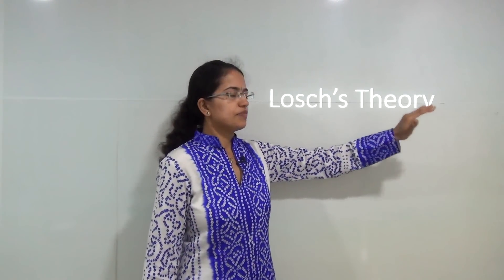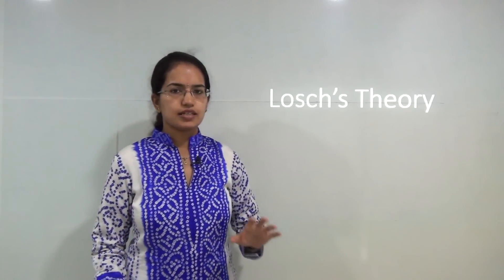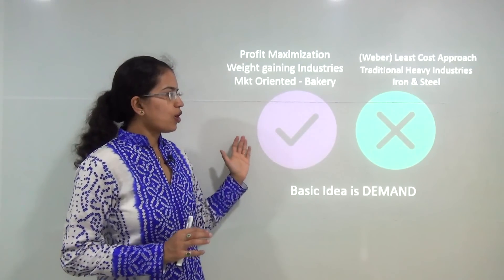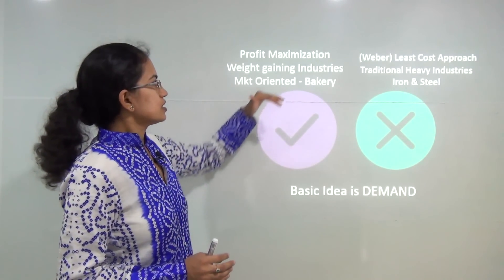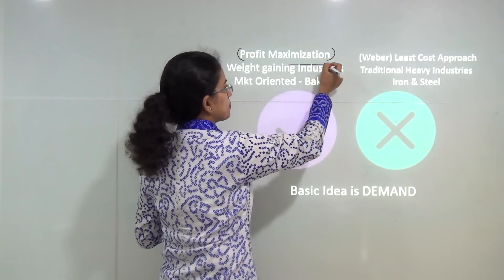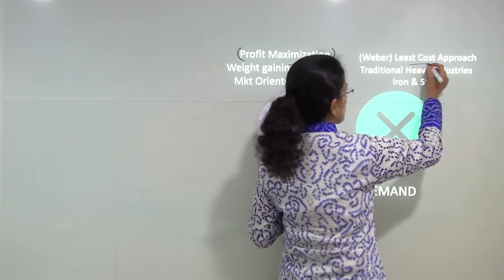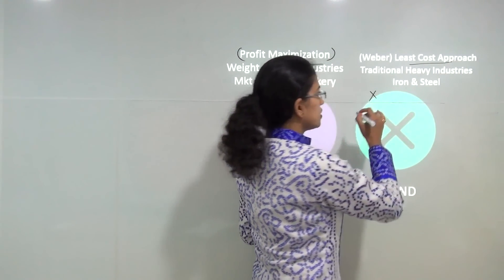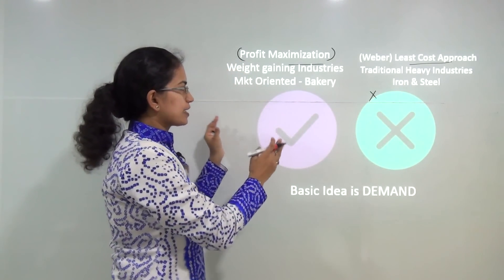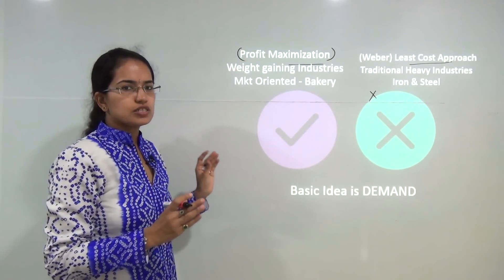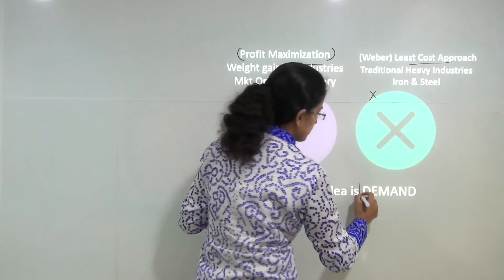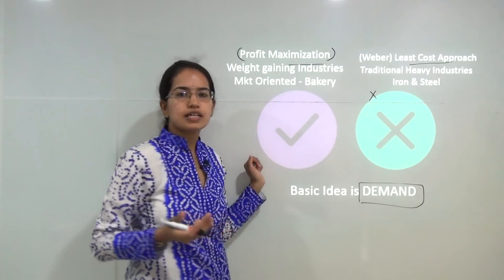Today we will understand the Lösch theory. We have already talked about the Christaller and Weber's theory, and now we will understand how Lösch gave a modification. Lösch believed the basic aim should be profit maximization, and it should not be like Weber's main approach, which was the least cost approach. So he discarded Weber's idea of least cost and said a market should be solely focused on profit maximization, where the basic driver is demand.